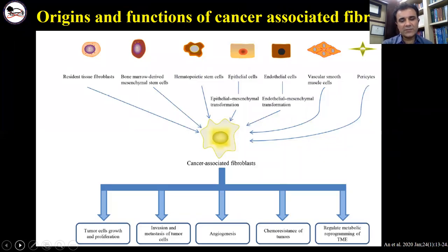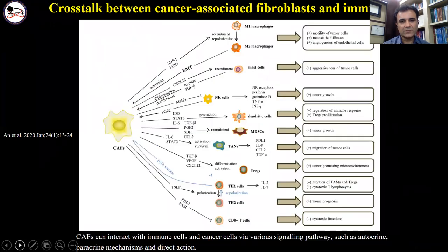CAFs can originate from different sources like resident tissue fibroblasts, bone marrow, mesenchymal stem cells, hematopoietic stem cells, epithelial and endothelial cells, vascular smooth muscle cells, and pericytes. They have different functions such as tumor cell growth and proliferation, invasion and metastasis, angiogenesis, chemo-resistance, and also regulating metabolic reprogramming of the tumor microenvironment. There is a complex relationship between CAFs and immune and cancer cells via different signaling pathways such as autocrine, paracrine, or even direct actions, resulting in immune escape and leading to progression and metastasis.